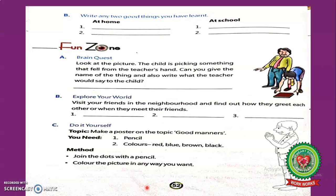Now open your book at page 52, fun zone exercise A — brain quest. Look at the picture: a child is picking something that fell from the teacher's hand. Write the name of the thing that fell and also write what the teacher would say to the child after receiving help from the student. Think about your answer and write it in your book.